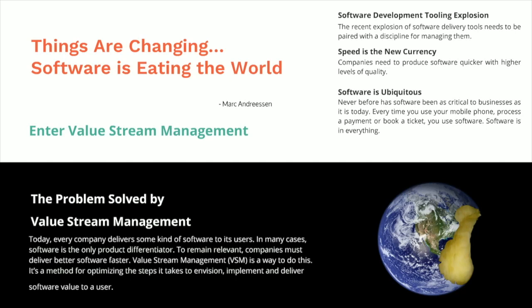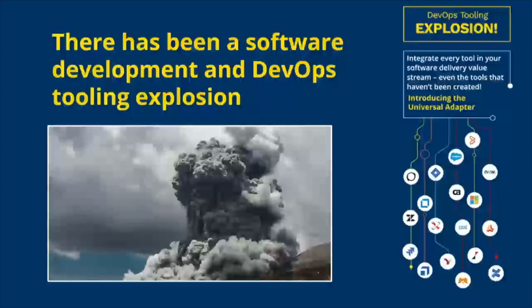Software's in everything — everybody's in the middle of digital transformation. And all of a sudden, enter value stream management and the problems it solves in order to help you through that. With all these changes in software delivery today and all the software that's out there, there's also been a tooling explosion that's occurred as well.